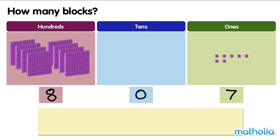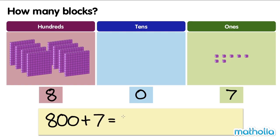The digit in the hundreds place has a value of 800. The digit in the tens place has a value of 0. The digit in the ones place has a value of 7. 800 plus 7 equals 807. There are 807 blocks.